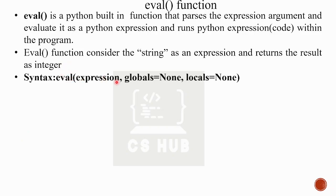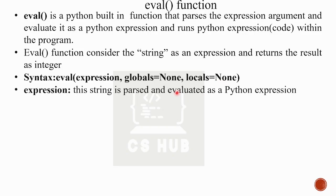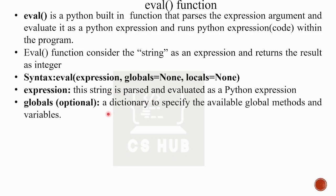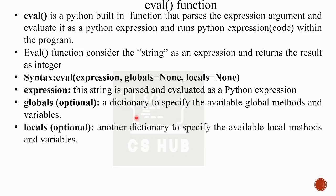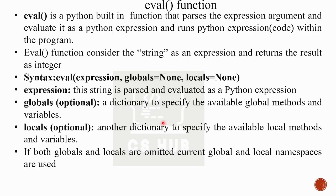The eval() function uses the syntax: eval(expression, globals=None, locals=None). It uses two extra optional parameters — globals and locals — which use the concept of namespaces. The expression parameter is a string that is parsed and evaluated as a Python expression. The globals and locals parameters are dictionaries used to specify the global and local methods.